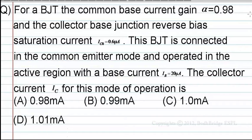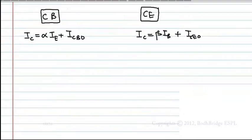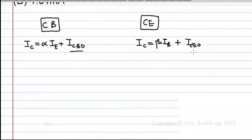In order to solve this question, we need to know some theory. In EDC, whenever we are given common base configuration, then IC equals αIE plus ICBO, the reverse saturation current in common base configuration. If it is common emitter configuration, then IC equals βIB plus ICEO, the reverse saturation current in common emitter configuration. These both have a relation: ICEO equals ICBO times (β plus 1).